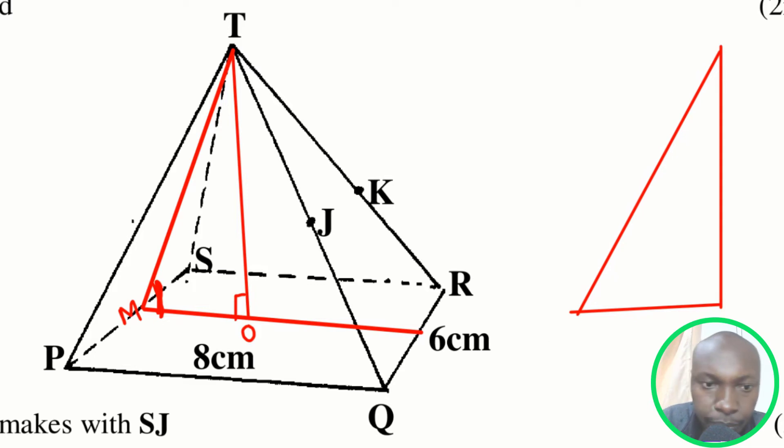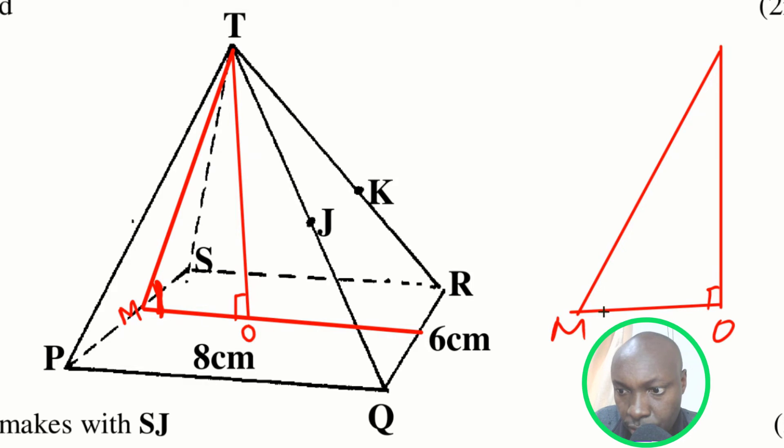So that is the triangle. This is point O, right angle at that point, then this one is M and this one is T. So the required angle is that.